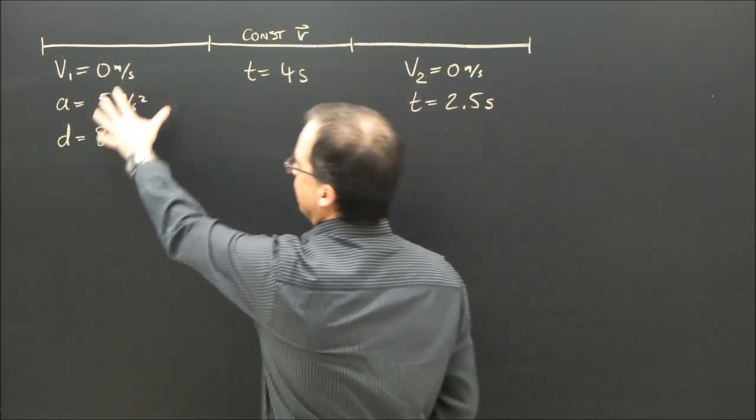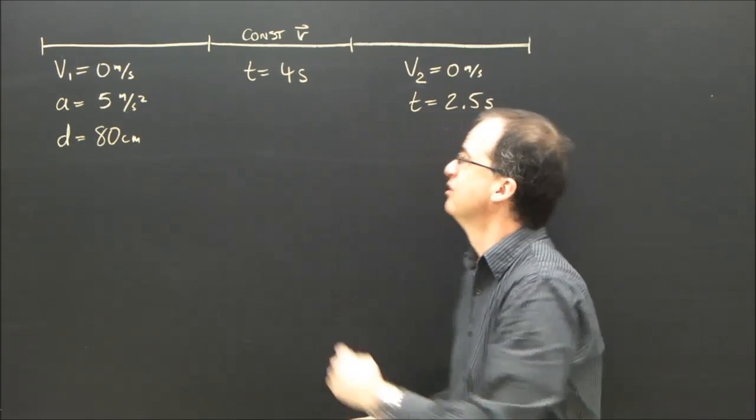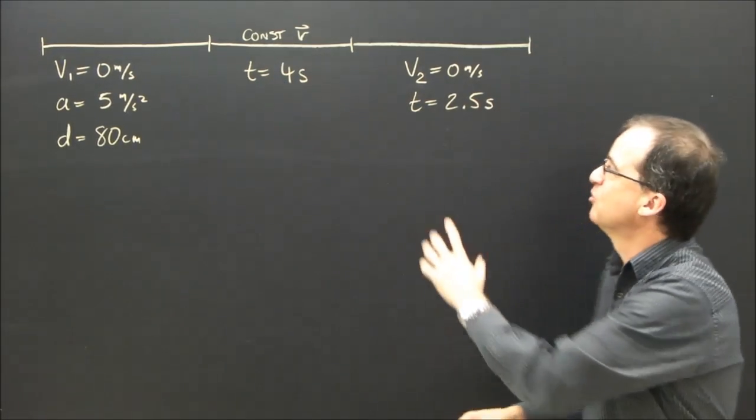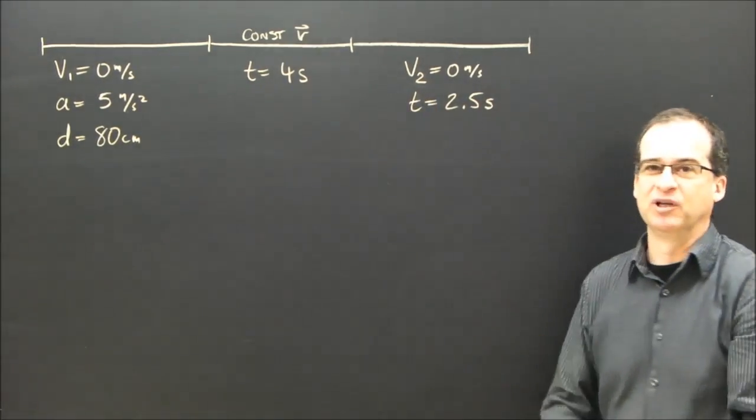You have five acceleration formulas for this section, you've got one constant velocity, d equals v times t for this section, and then when it's slowing down, you have one formula for this section.